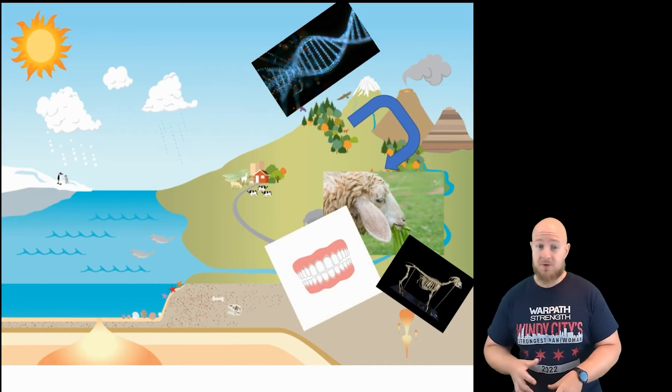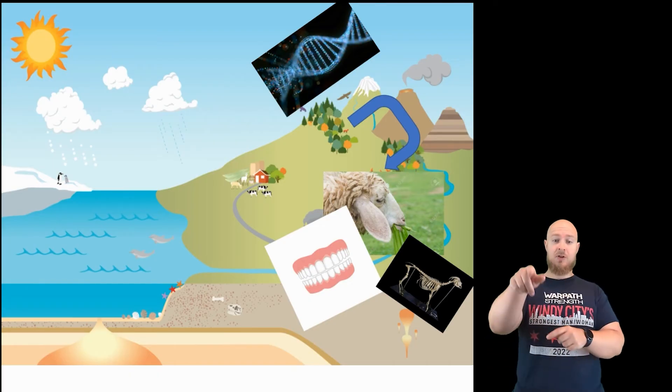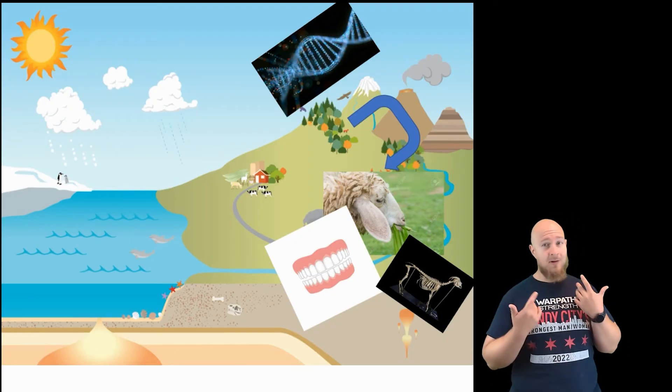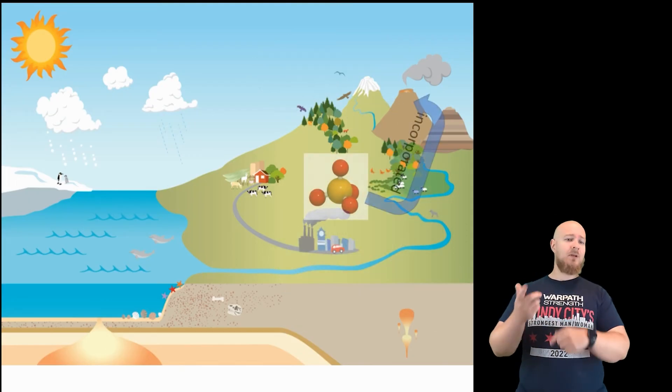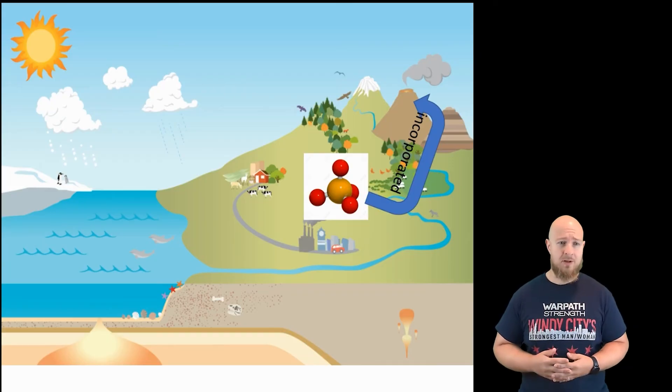Organisms require phosphorus not only for their own DNA, but also because phosphorus, especially for animals, is important for maintaining our bone structure and the health of our teeth. Of course, after some time, the phosphorus can then be incorporated back into the lithosphere as things die, decompose, and pile on top of each other.